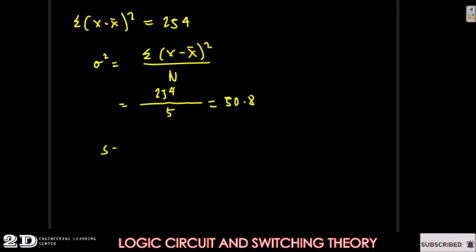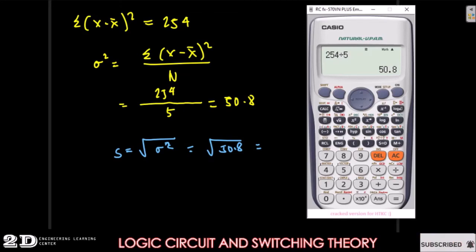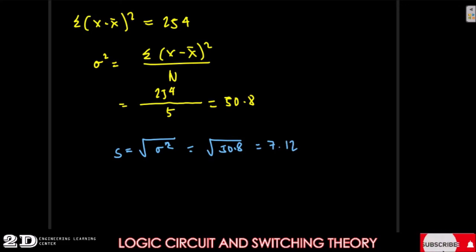Our standard deviation is equal to the square root of our variance, so the square root of 50.8, which equals 7.12. So our variance is 50.8 and our standard deviation is 7.12. This is for ungrouped data. I hope you learned something from this video, and as always, keep on studying.